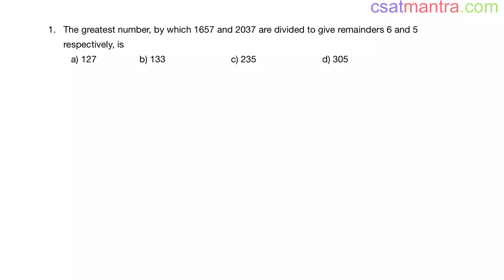The greatest number by which 1657 and 2037 are divided to give remainder 6 and 5 respectively is...